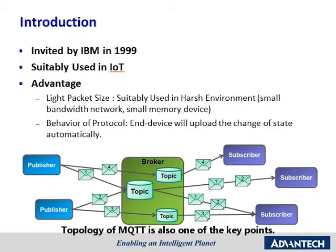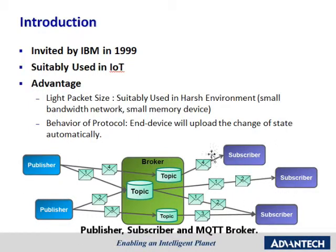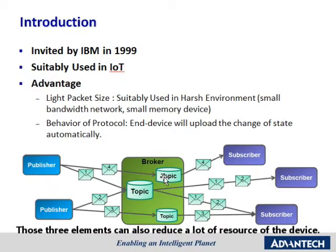The topology of MQTT is also one of the key points. MQTT is composed of three elements: publisher, subscriber, and MQTT broker. These three elements can also reduce a lot of resources on the device.